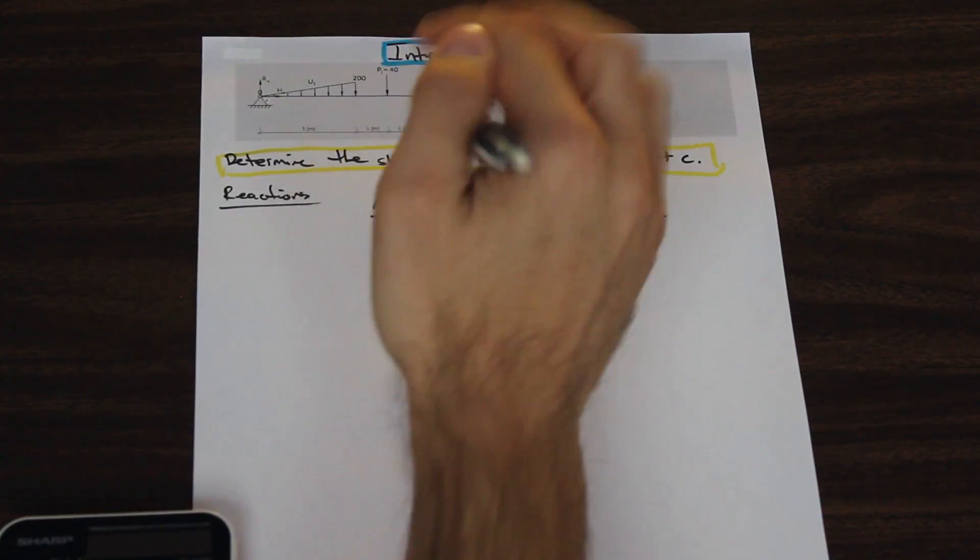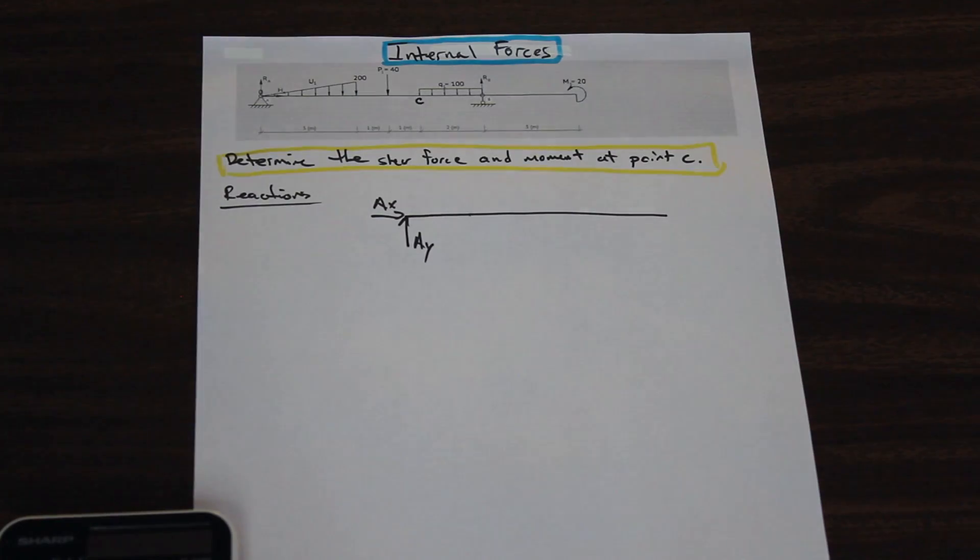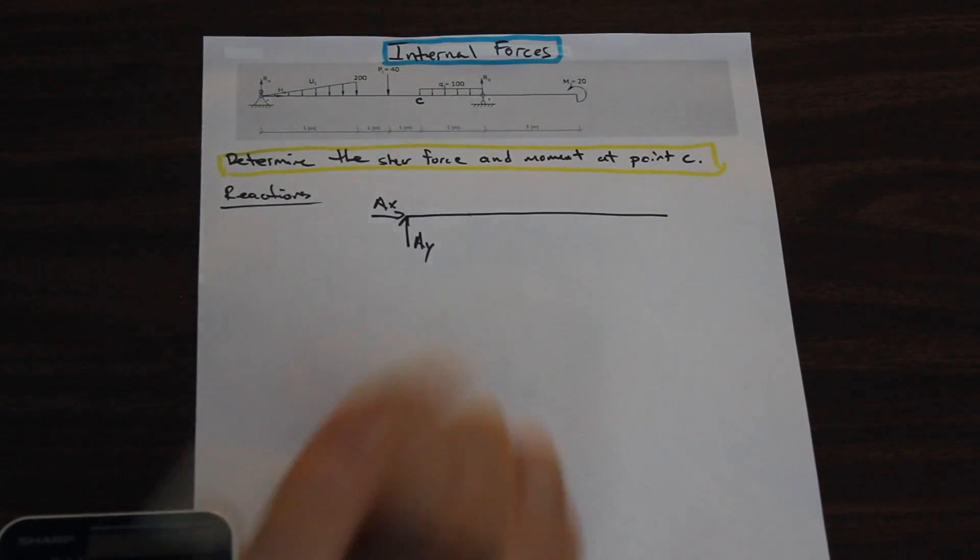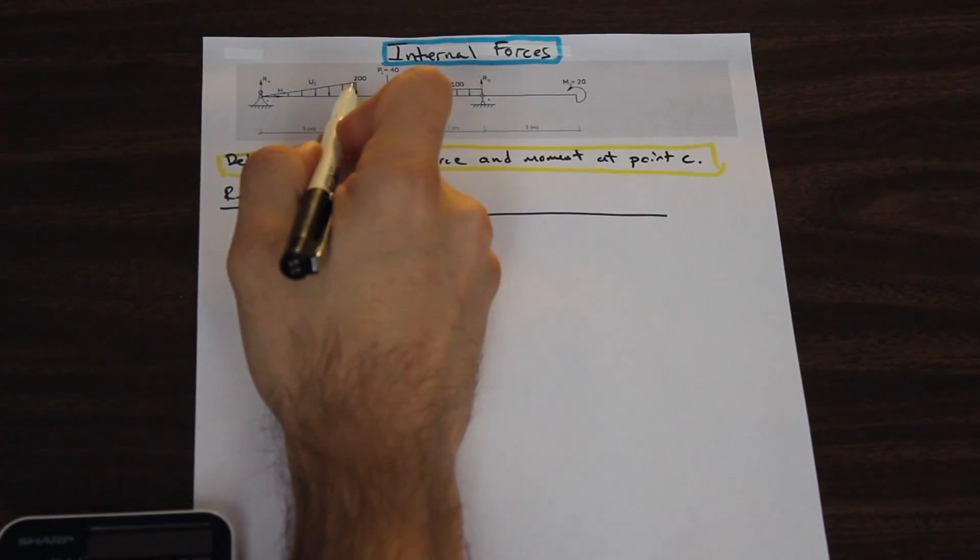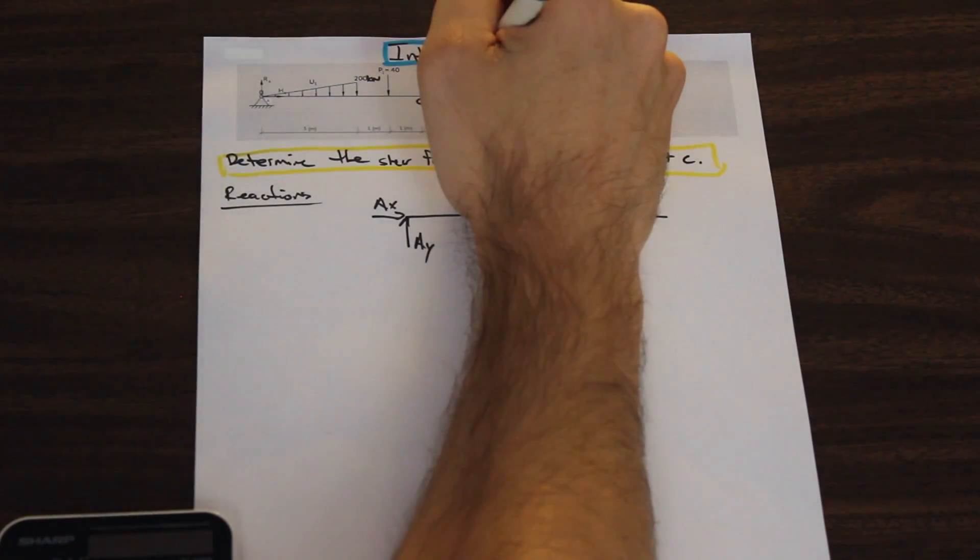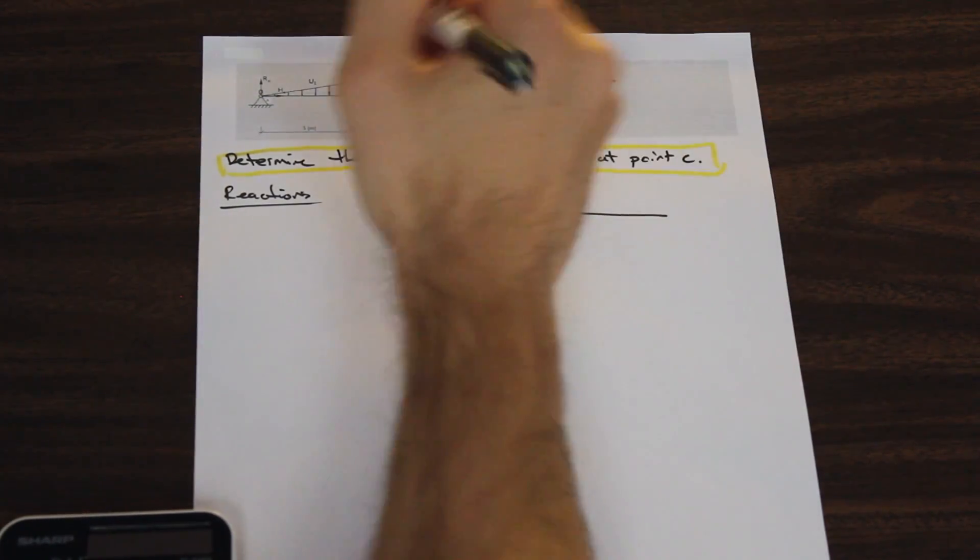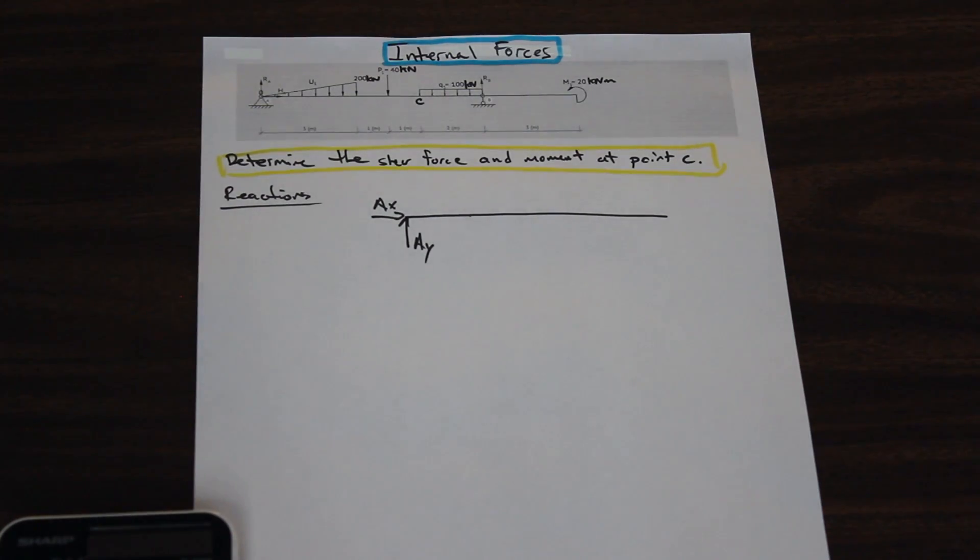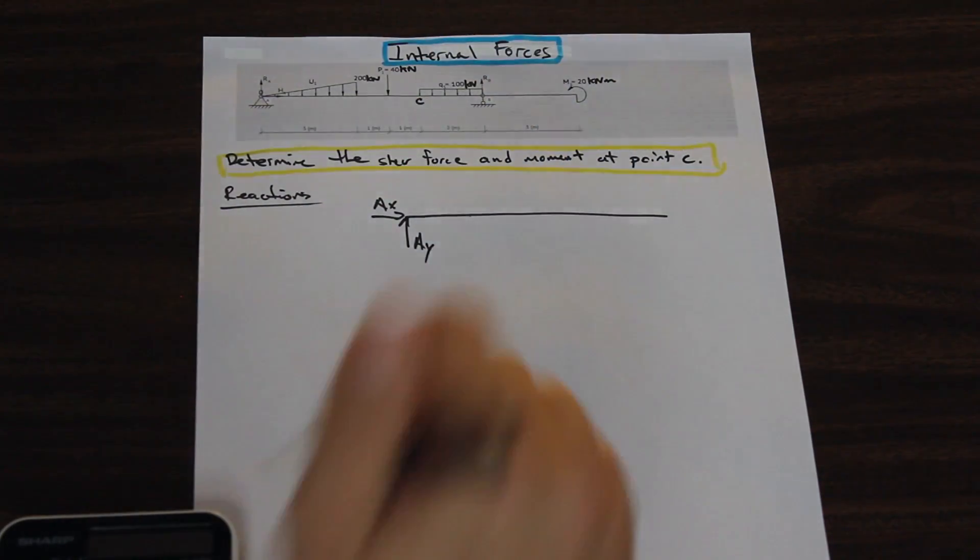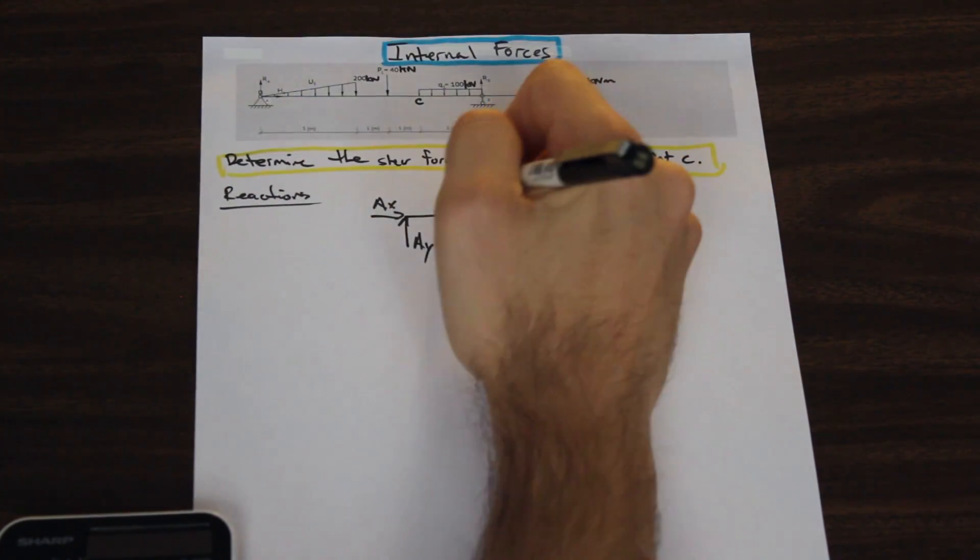This triangular force, we're going to resolve it just like you'd find the area of a triangle. So we have base times height, so 3 meter base times 200 kilonewton height. We have 600 divided by 2. That's going to give us a 300 kilonewton force.